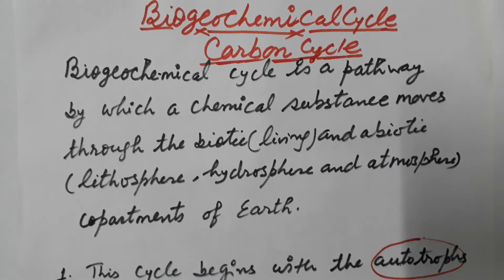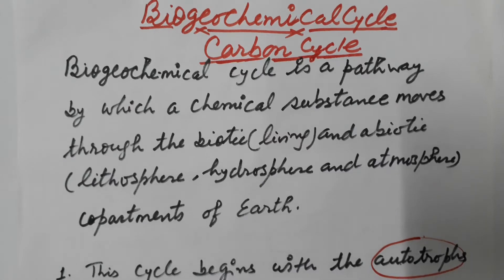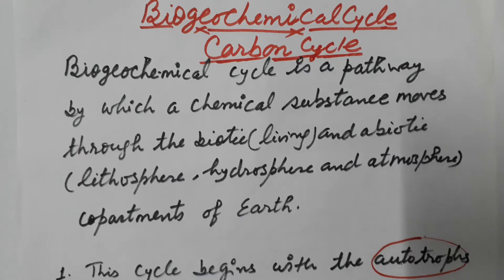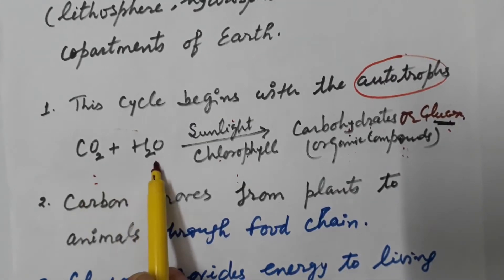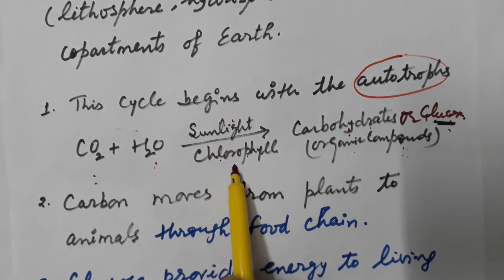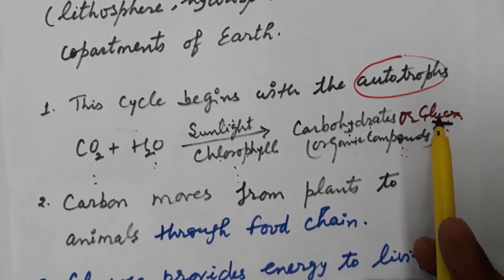Carbon is incorporated into life forms through the basic process of photosynthesis, which is performed in the presence of sunlight by all living organisms that have chlorophyll present, like green plants, certain bacteria and some protozoans. They perform the process of photosynthesis to synthesize their own food material using CO2 and water in the presence of sunlight and chlorophyll. Glucose is produced in their body.